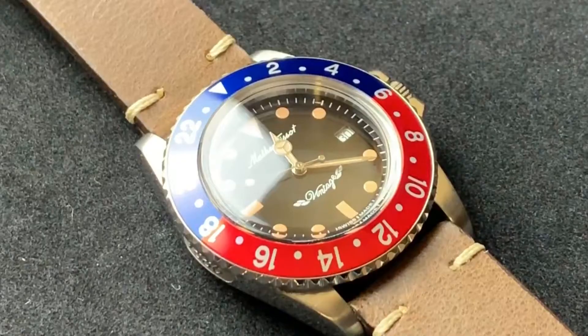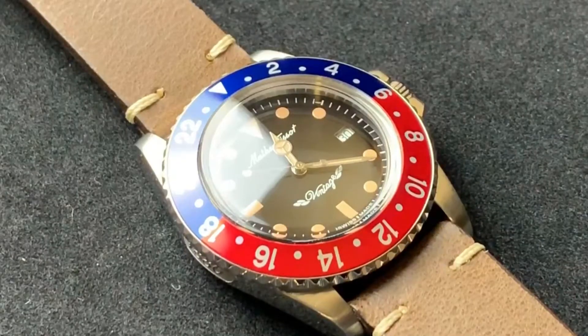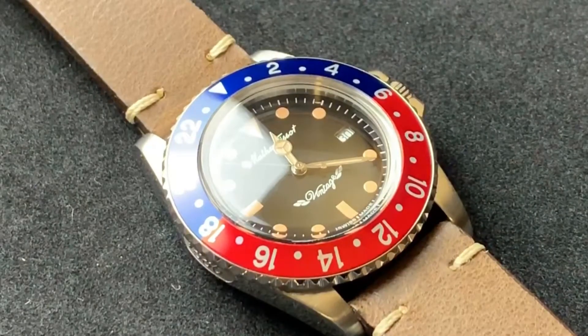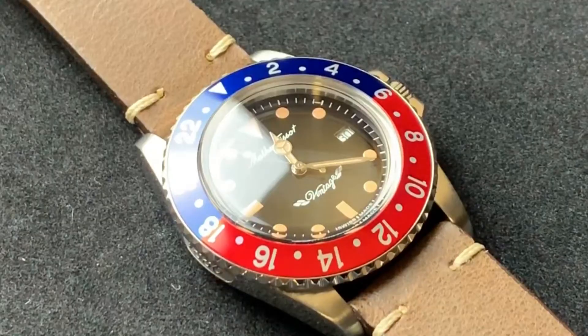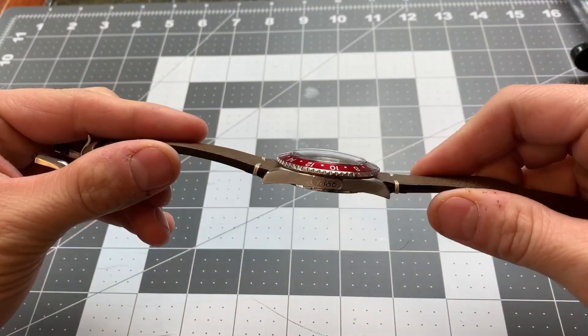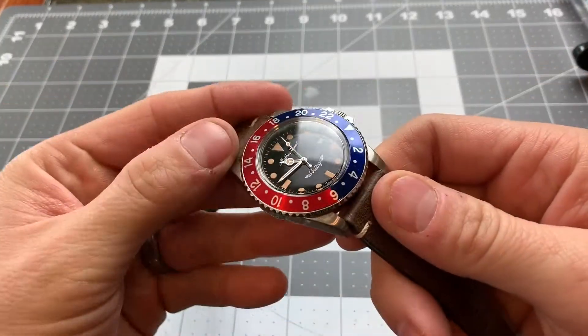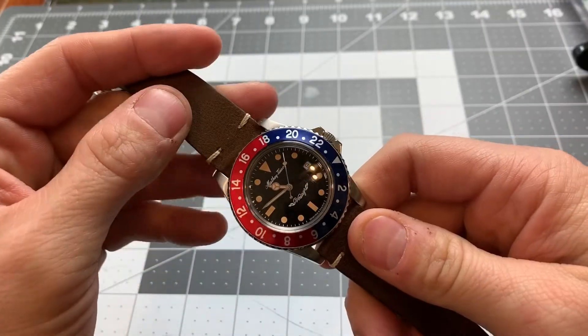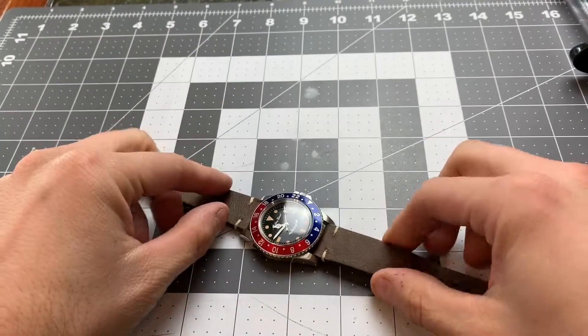There's a few things that you need for this build. You need a small container, you need the oil itself, and you need to disassemble the watch. I have a tool kit that has everything that you need to disassemble and work on watches.